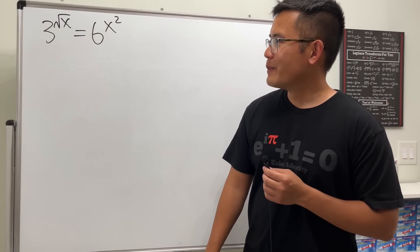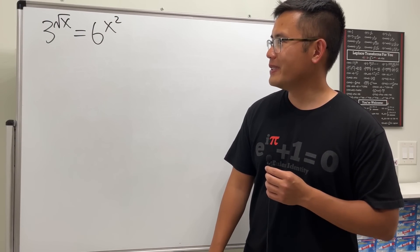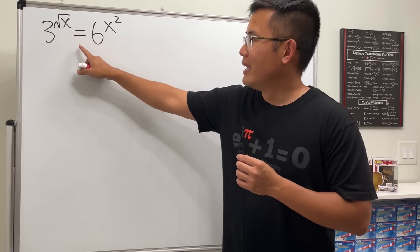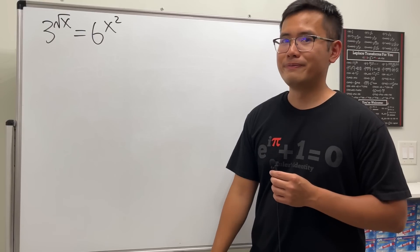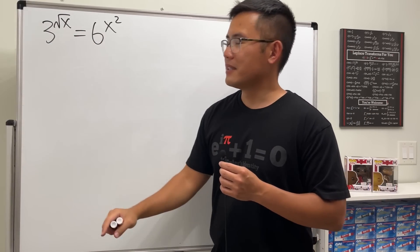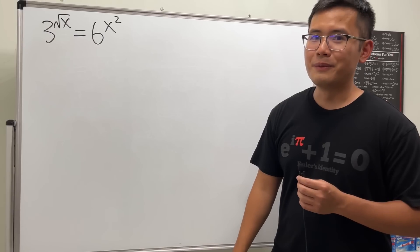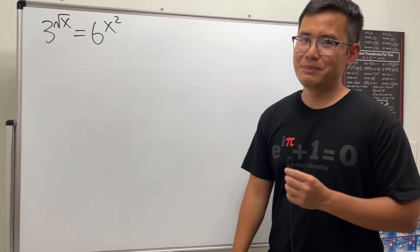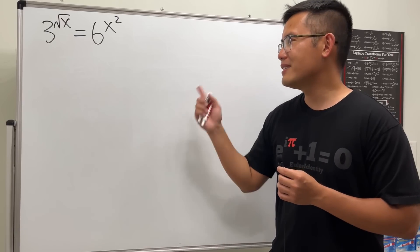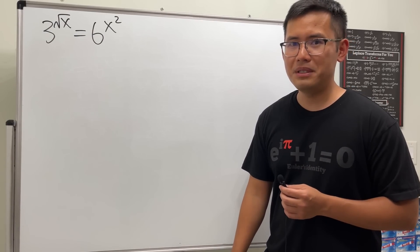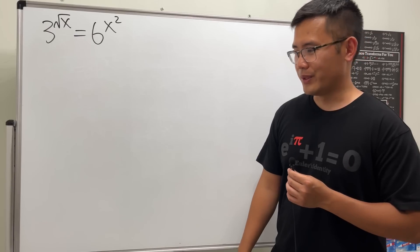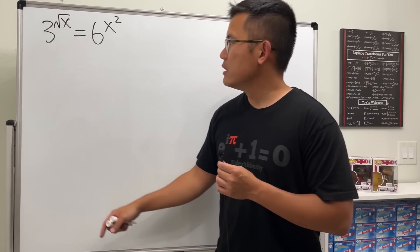Here I made up a pretty crazy exponential equation: we have 3 to the square root of x power equals 6 to the x squared power. We have an exponential equation where the bases are different and the exponents are different. As always, please pause the video and try this first. One of the answers might be zero — yeah, I know, the answer is zero, right? Maybe — I'm not sure if that's the only answer, so let's see if we can work it out.